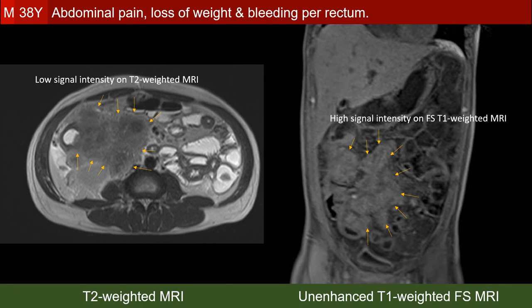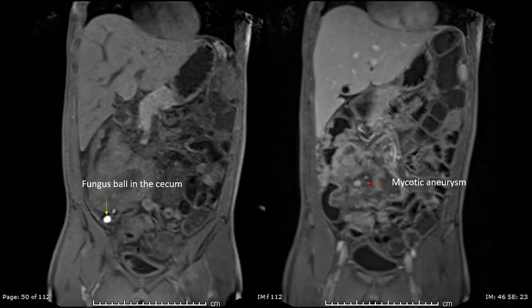After MRI, we can put the observations in a better context. The assumption of fungal infection is given higher priority because the lesion has low signal intensity on T2-weighted images, high signal intensity on fat-saturated T1-weighted images, and even higher signal spots within the lesion. There is a very bright structure within the lumen of the cecum on T1-weighted images, which is presumably a fungus ball. There are also aneurysms within the invasive retroperitoneal lesion medial to the ascending colon, most probably mycotic aneurysms.